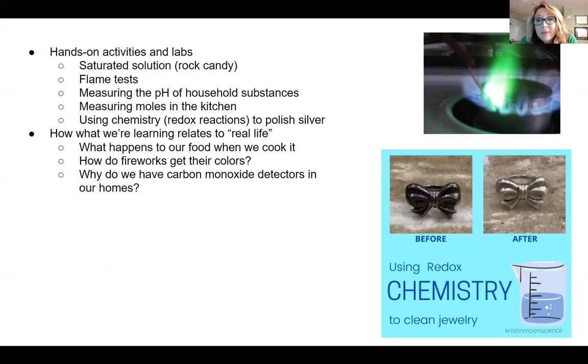We do flame tests when they're learning about electron configurations and they can actually see what this looks like. This is what copper looks like, the element copper, when it is heated in a flame. So they can test some different elements that they have around their house to see what flame color it produces.